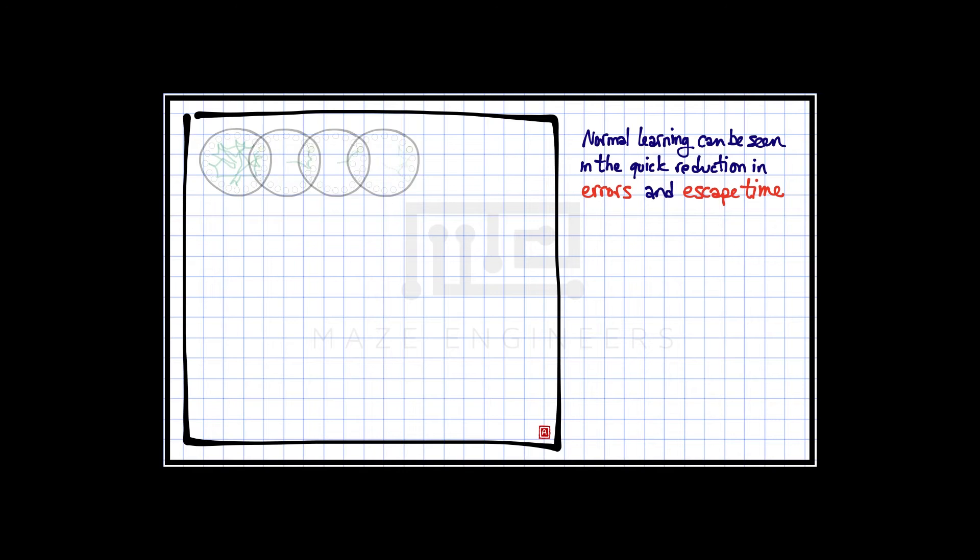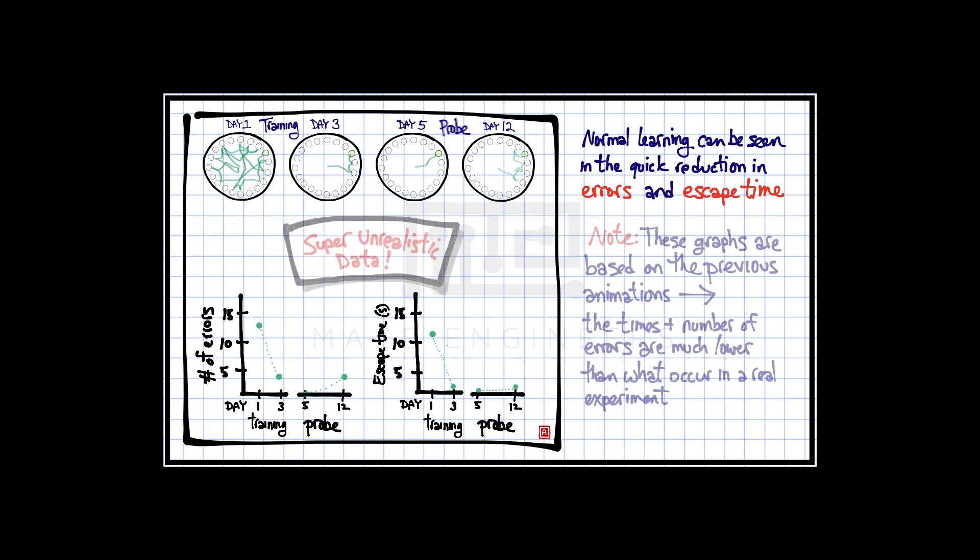Normal learning can be seen in the quick reduction in errors and escape time. Note, these graphs are based on the previous animations. The times, plus the number of errors, are much lower than what occur in a real experiment.